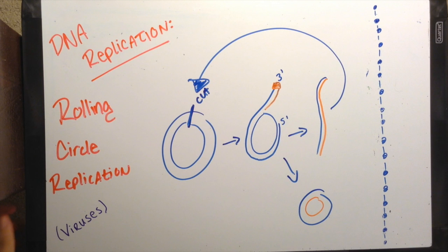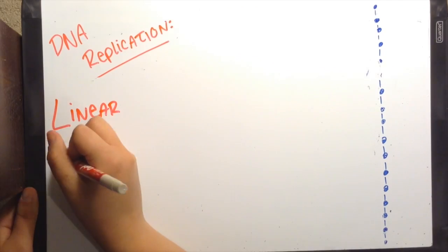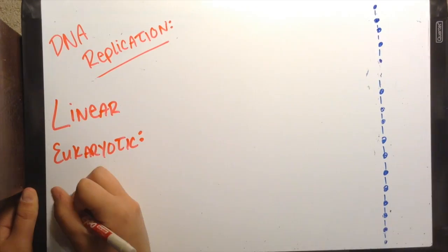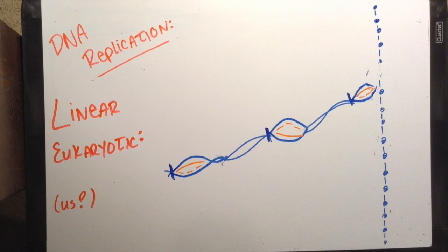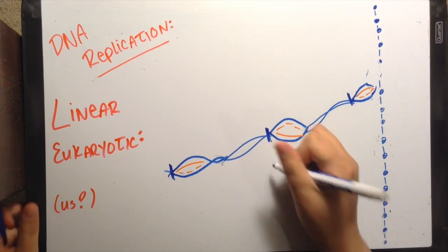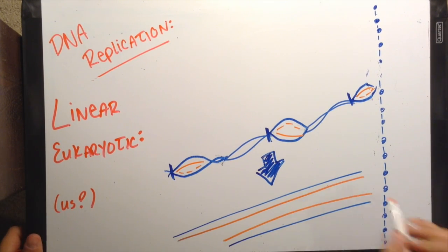Linear eukaryotic replication occurs in multiple replication forks along the strands at a slower rate than in bacteria. Replication takes place on both strands at each end of the bubble. The different replicons or segments being replicated run into each other and fuse to make new strands of double DNA.